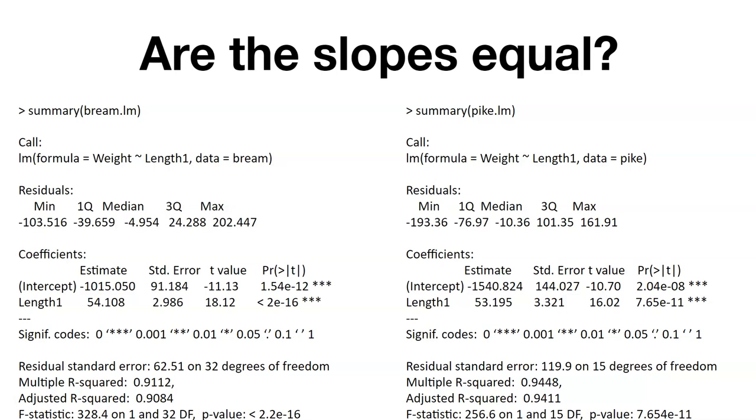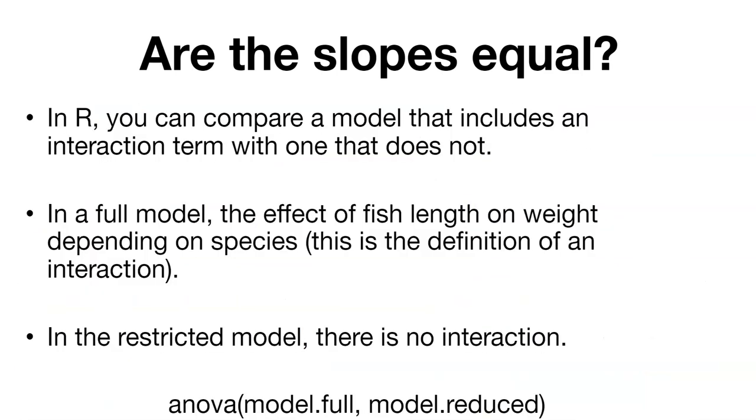So we'll do that by hand in a calculation later. But you could also do this in R. So in R, you can compare the model that includes an interaction term with one that doesn't. Now adding that interaction term in the model is going to assess whether or not that covariate that you add, in our case weight, adds to the model. And so what we can do then is create a full model that has the effect of fish length on weight depending on species. And remember, that's the definition of the interaction and how we might do that, say, in a two-way analysis of variance.